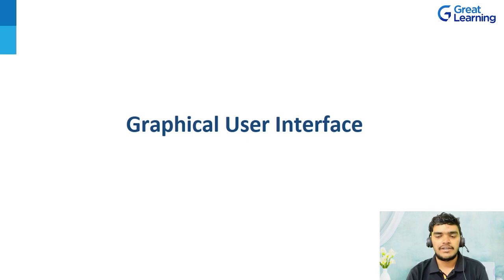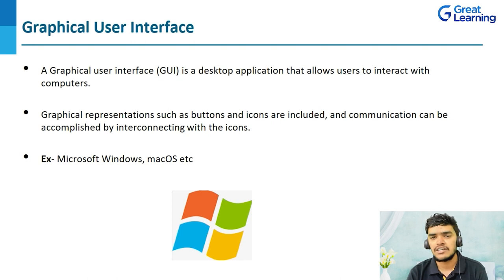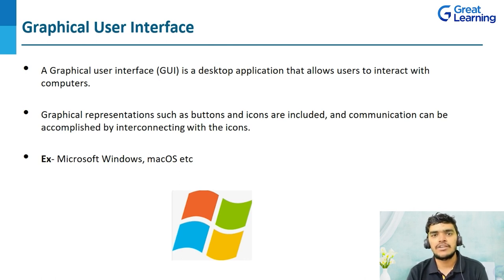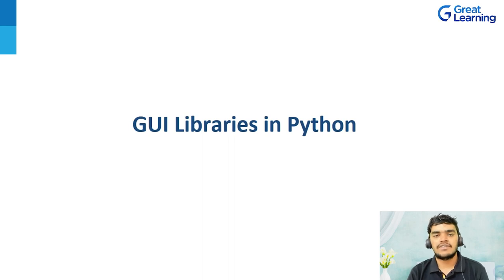GUI stands for graphical user interface. In simpler terms, it is a desktop application that allows users to interact with computers. Graphical representations such as buttons and icons are included, and communication can be accomplished by interacting with those icons. Whenever you open your computer, you see many icons — that is you interacting with the graphical user interface. Examples of GUI include Microsoft Windows and macOS.